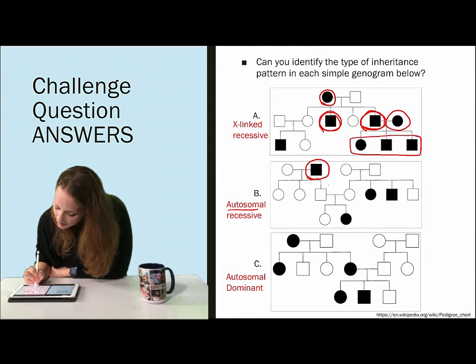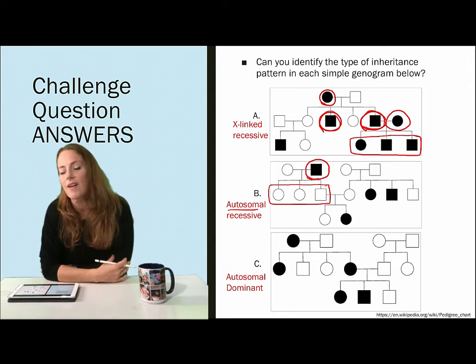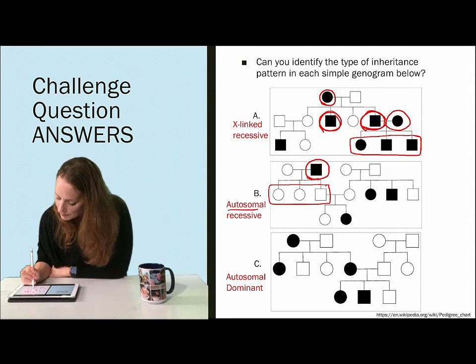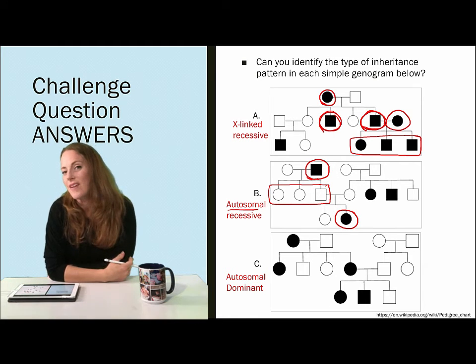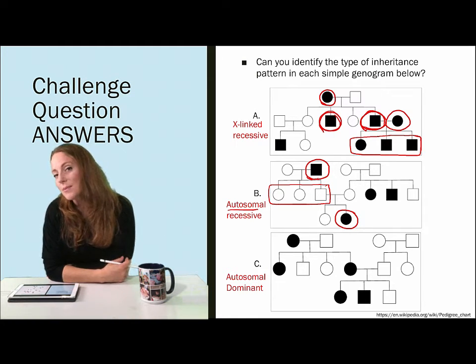None of his children in the first generation were affected but his grandchild was affected. So this trait skipped a generation and showed up in the grandchild, meaning that the child had a parent who was a carrier.